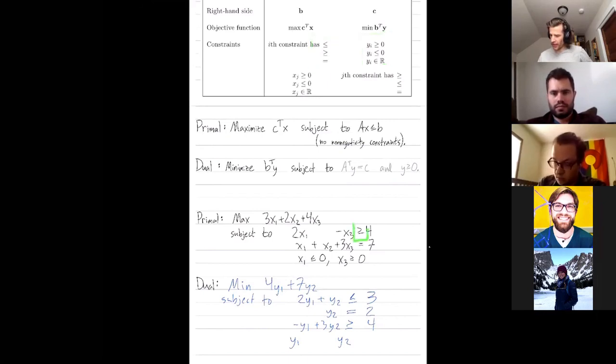So the first constraint had a greater than or equal to. So that means y1 is less than or equal to zero. And the next constraint had an equals to. And so that means y2 is unbounded.